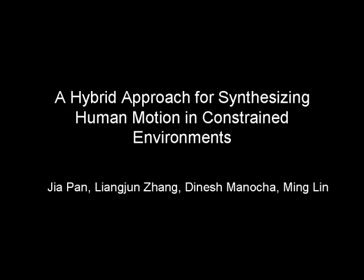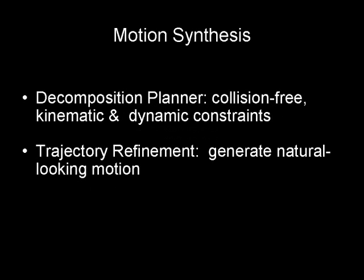We present a new algorithm to generate plausible, human-like motion in constrained environments with multiple obstacles. Our algorithm uses a two-phase approach. First, we perform full-body motion planning to obtain a collision-free path which satisfies kinematic and stable dynamic constraints. The resulting path may not be smooth or natural-looking. Therefore, in the second phase, we improve the computed trajectory by blending the path with postures from motion capture data.